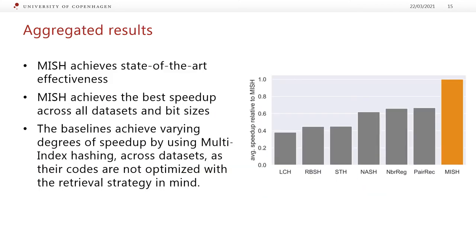Looking at aggregate results over all datasets and bit sizes, we compare the baselines relative to MISH. Notably, RBSH, NASH, and PAIREC are all newer models performing approximately similarly in terms of precision at 100, and from the methods themselves it is not obvious there should be a large efficiency difference. However, RBSH is clearly much less efficient than NASH and PAIREC when using multi-index hashing. This highlights the importance of actually experimenting and evaluating the retrieval strategy on which the codes are supposed to be used, rather than only looking at effectiveness.